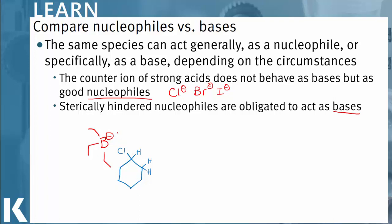Instead, that base is going to extract one of these protons and cause the electrons to shuffle around to create a new product which is an alkene. So sterically hindered nucleophiles must act as a base and therefore form a new covalent bond to a hydrogen as opposed to a new covalent bond to a carbon.